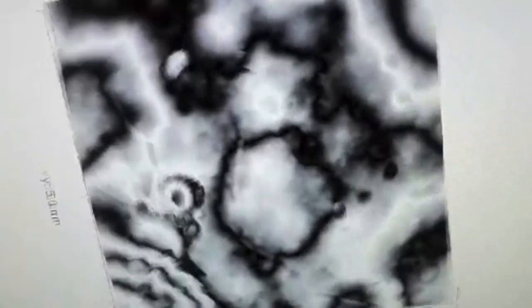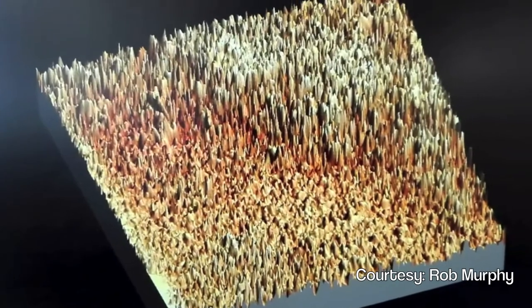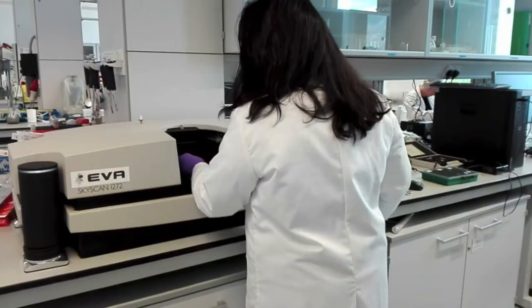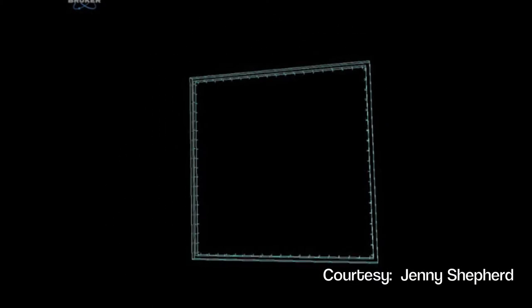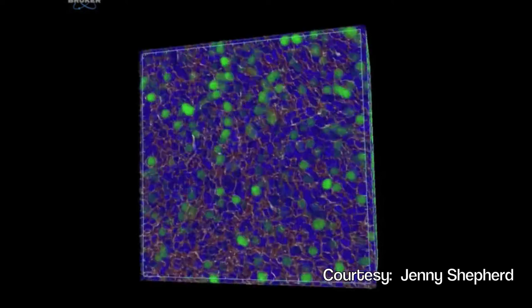We then characterize our scaffold's surface structure and roughness using techniques like atomic force microscopy. And we use microcomputer tomography to look at the internal structure of our scaffold, along with how open and connected the pathways in it will be for our cells.